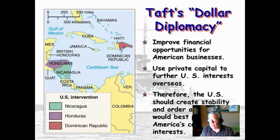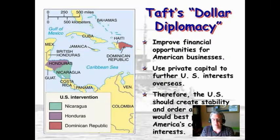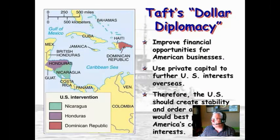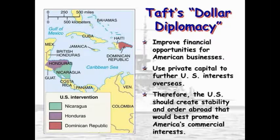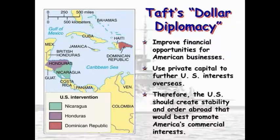William Howard Taft became president after Teddy Roosevelt, and he believed in what was known as dollar diplomacy — where the United States' economic interests are threatened, we will go to war. He improved financial opportunities for American businesses and used private capital to further U.S. interests overseas. The U.S. should create stability and order abroad that would best promote America's commercial interests. What does that mean? If it didn't concern the United States making money, Taft didn't care. That's what dollar diplomacy means.